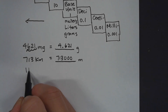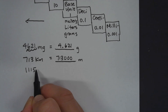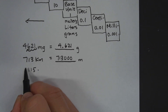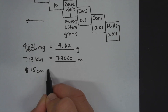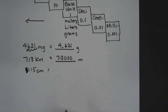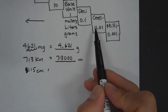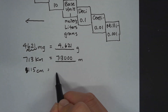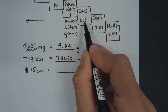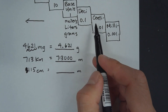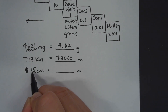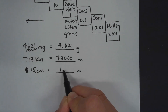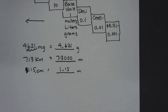Next we'll look at 115 centimeters and convert this to meters. Centimeters is here and meters is two places to the left, so we're going to the left two places. Moving the decimal two places to the left gives us 1.15 meters.